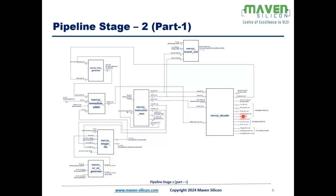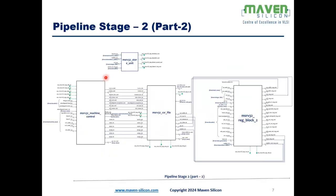Stage 2 also includes the store unit, machine control unit, CSR file unit, and Reg Block 2. The store unit is crucial for data transfer between the processor and data memory — it provides the data the processor wants to store back to memory. The machine control unit handles interrupts. The CSR file configures the control and status registers. Reg Block 2 serves as the Stage 2 pipeline register for synchronization.